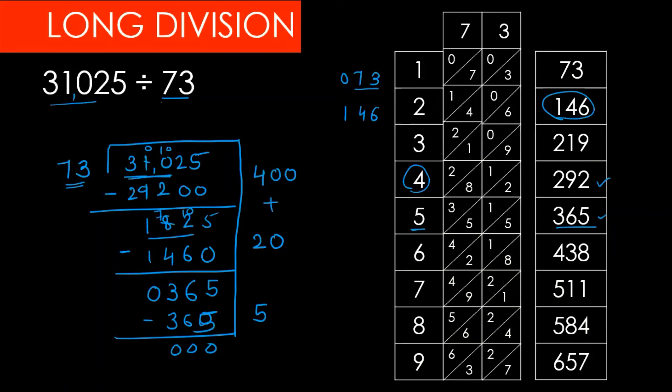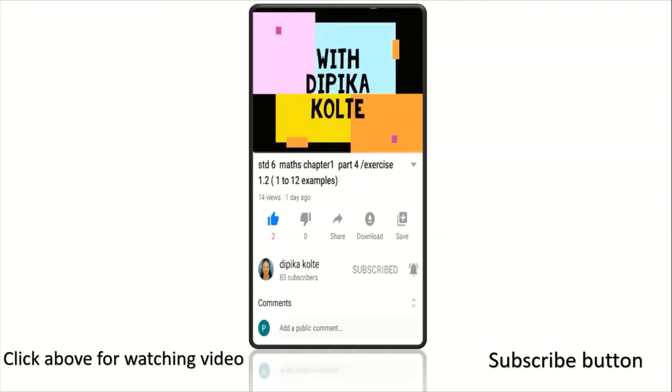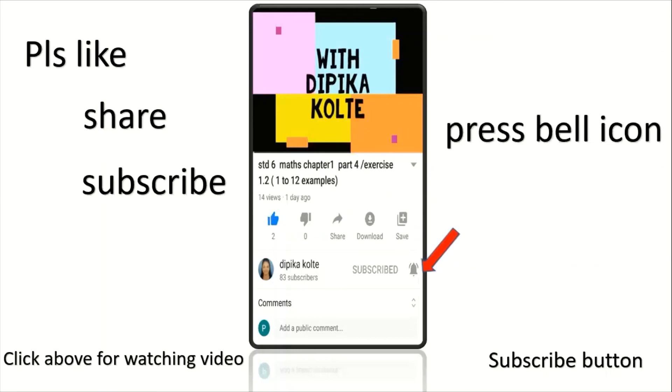Now what is our answer? 400 plus 20 plus 5 equals 425, so this will be our answer. If you liked this video, please like, share, and subscribe. Click on the bell icon for new video notifications. Thank you, bye-bye.